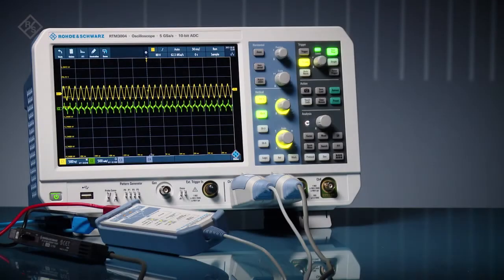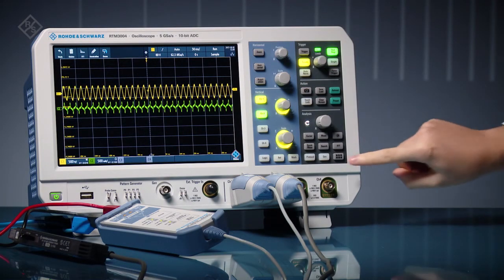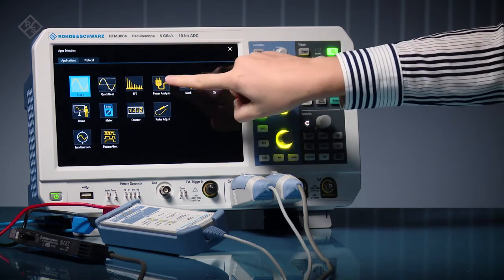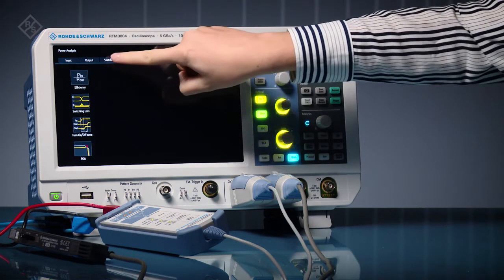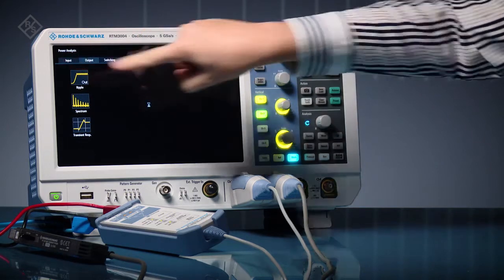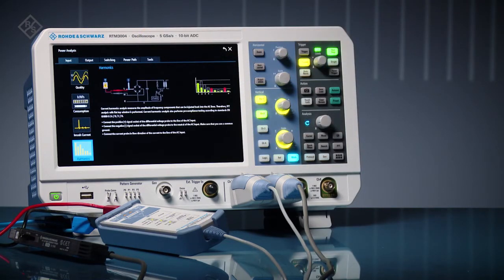The Rohde & Schwarz RTM 3000 and RTA 4000 Series Oscilloscopes offer a power analysis application. Open the application and choose from a broad set of power measurements. In this example, we'll determine pre-compliance for harmonics.